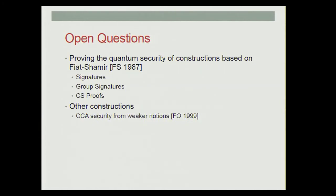Some open questions remain. First, proof techniques based on the Fiat-Shamir paradigm, while very similar in structure to the proofs handled in our paper, still lack a quantum security proof — the problem is that during the special query the underlying identification protocol is initiated and there is no clear quantum analog to this. Also, there are many other random oracle security proofs that still need quantum random oracle model proofs.